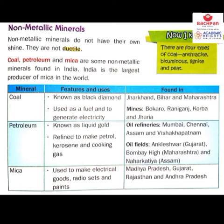There are four types of coal: anthracite, bituminous coal, lignite, and peat. Coal is known as black diamond because it is widely used. Coal is used as a fuel to generate electricity, in thermal power stations, and earlier the railways used to run on coal. Coal is found in Jharkhand, Bihar, Madhya Pradesh, and Maharashtra. Major coal mines include Bokaro, Raniganj, Korba, and Jharia.